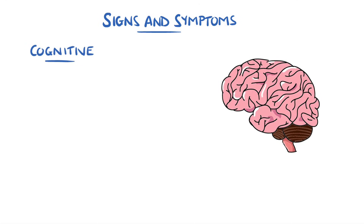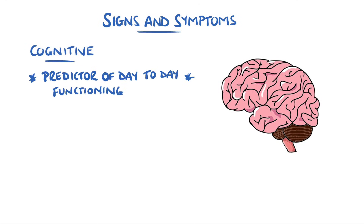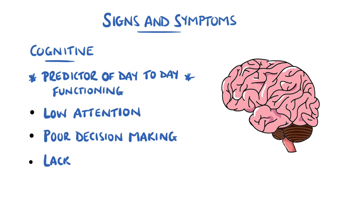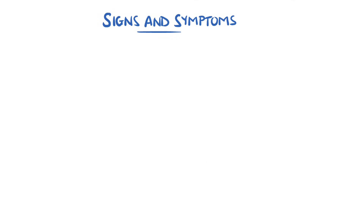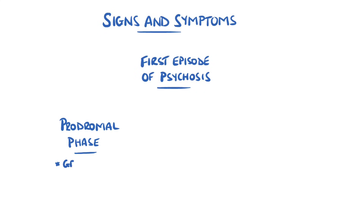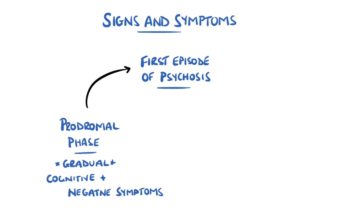The cognitive symptoms are a predictor of day-to-day functioning and are amongst the earliest symptoms to appear. Problems manifest as low attention levels, poor decision-making, and problem-solving abilities. The onset of these symptoms typically follows a prodromal phase, where there is a gradual development of primarily cognitive and negative symptoms, followed by the first episode of psychosis.